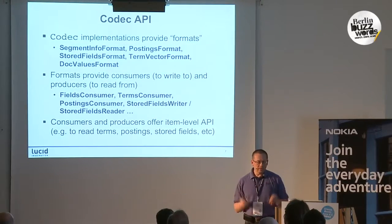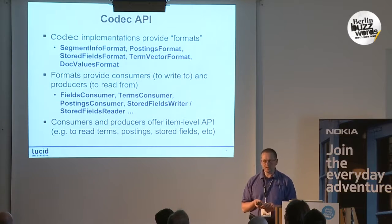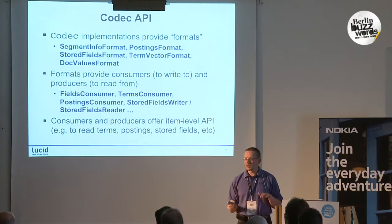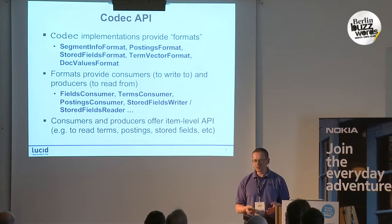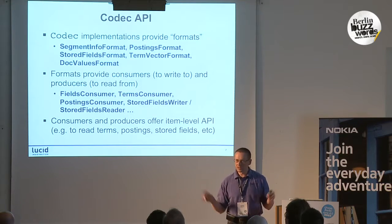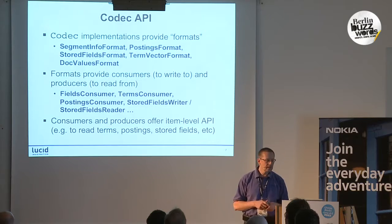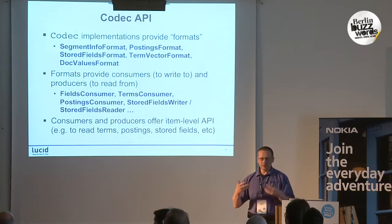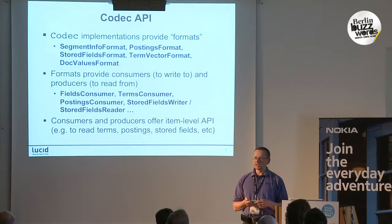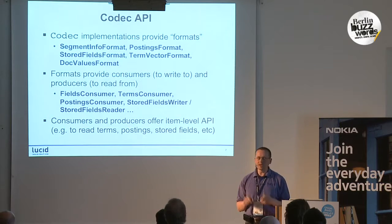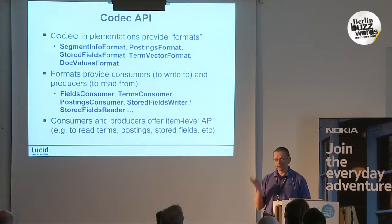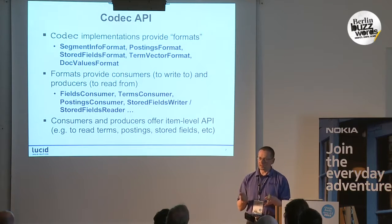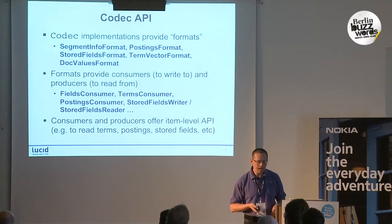Each of these formats deals with a particular part of the index and determines how data is written to disk and in what file format. These high-level formats provide consumers — Lucene writes data to these consumers — and the counterpart is producers, which produce data back out. You have fields consumers, terms consumers, and so on, all exposing item-level granularity. For a terms consumer you just write terms; for a postings consumer you write just postings data.